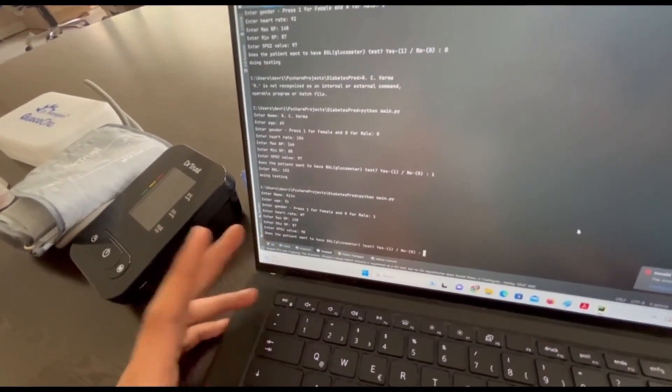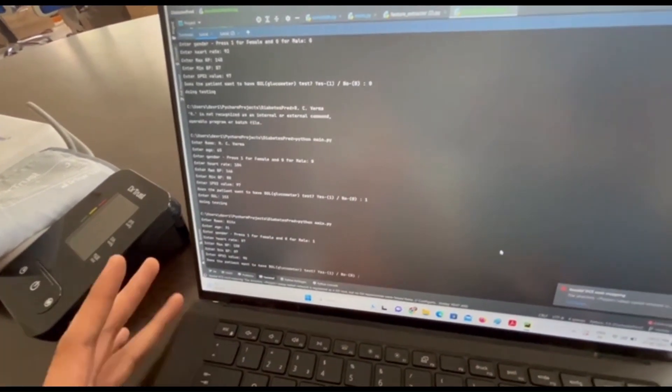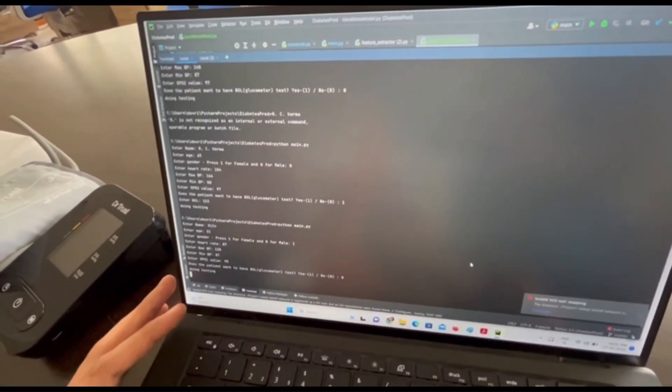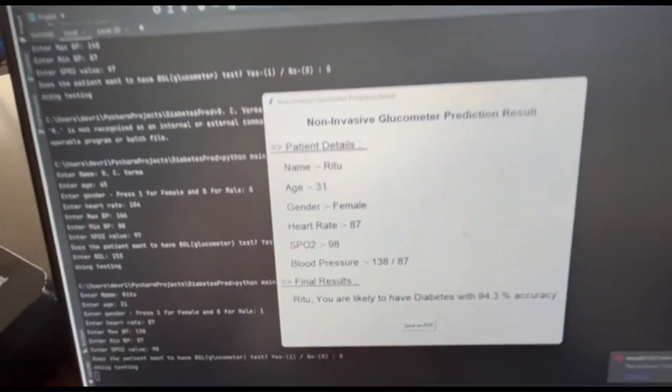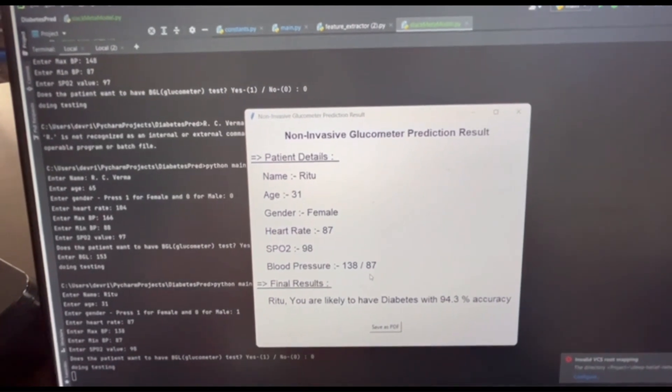It's asking if I want to have the prick test just to print it on the report. I'll say no for now though we'll validate it later. It's testing using pre-trained hyper-tuned ML models at the back end and we have the results and it says you are likely to have diabetes.